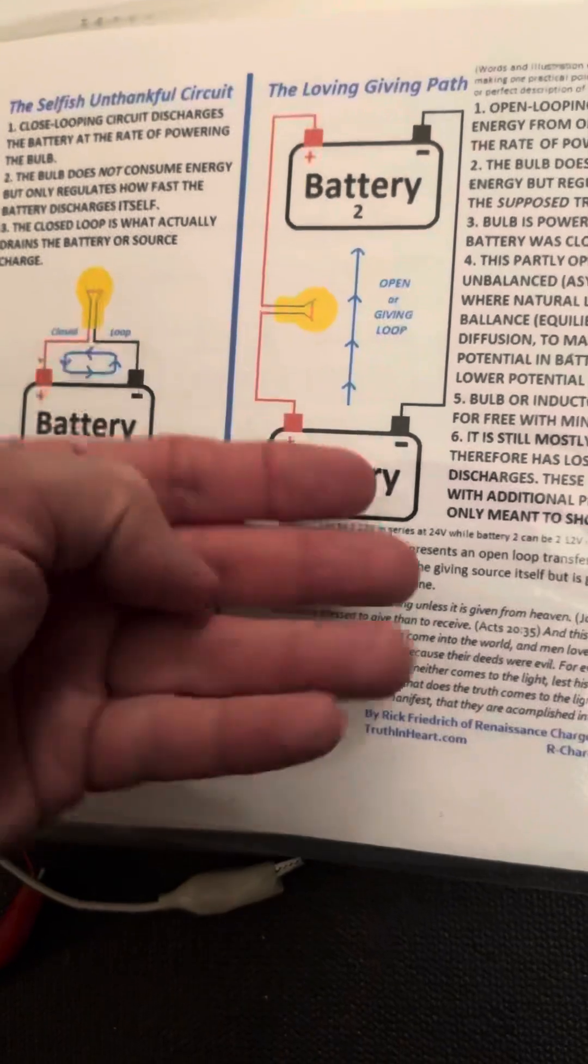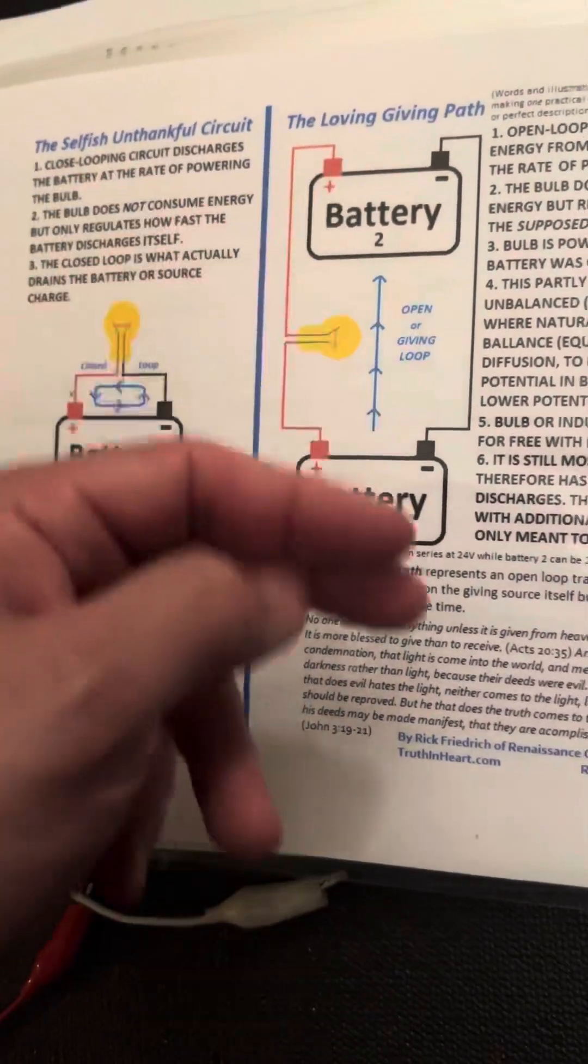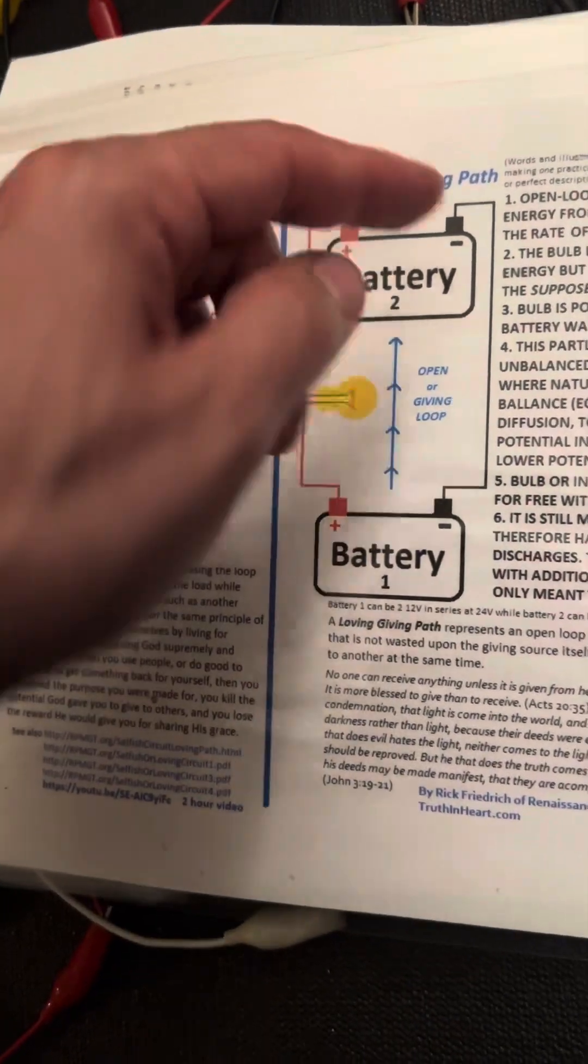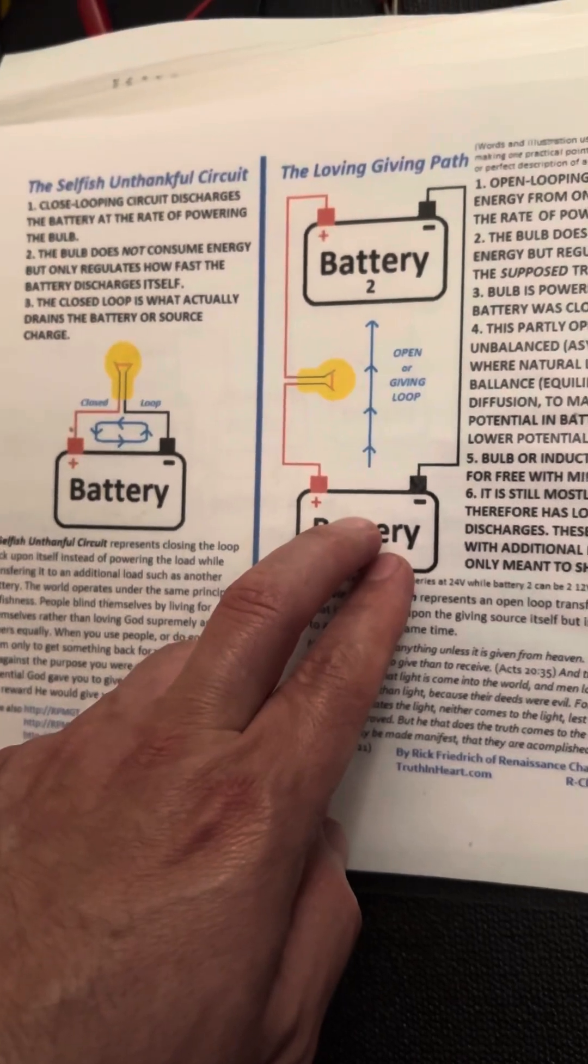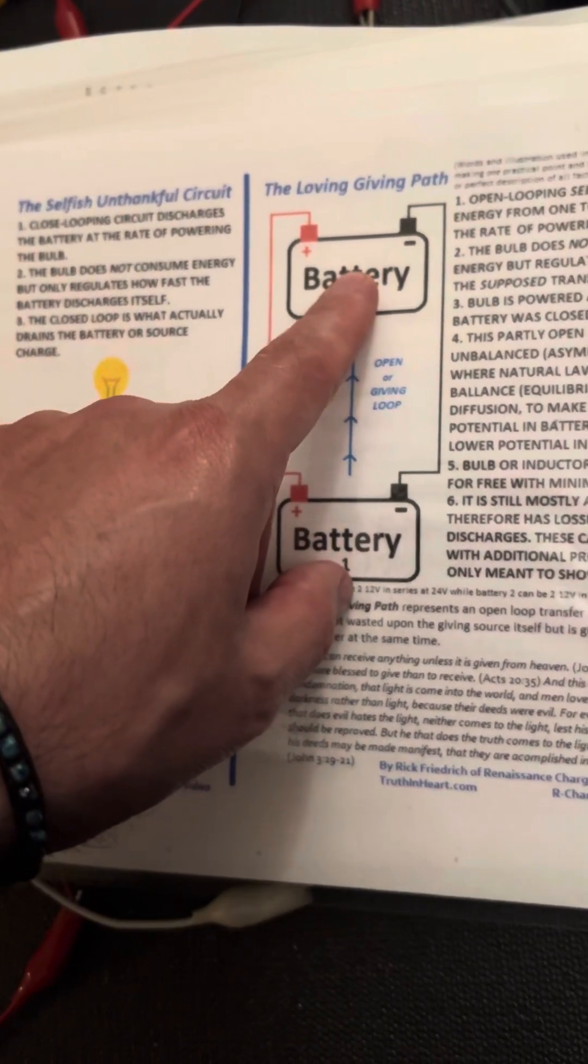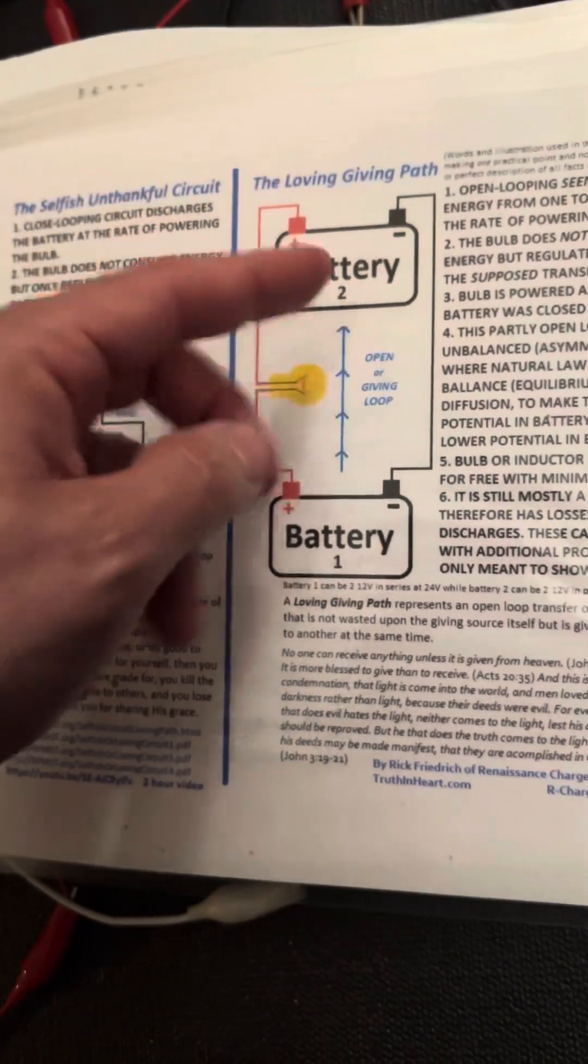Now, when you have two batteries, you can move the charge series parallel. Series is high voltage. Parallel is low voltage. So two 12 volt batteries in series is 24 volts. Two 12 volt batteries in parallel is 12 volts, but double the capacity, right?